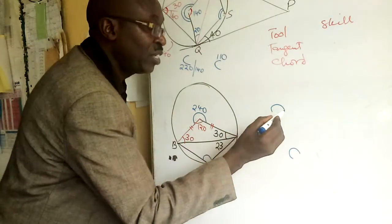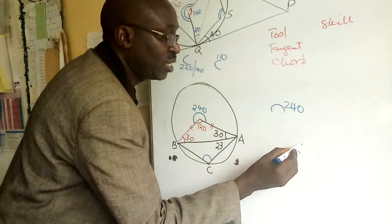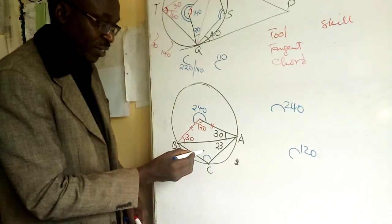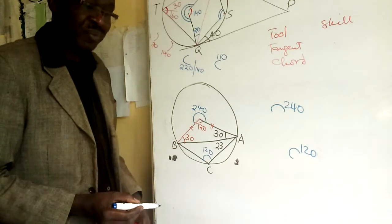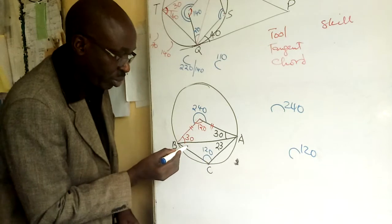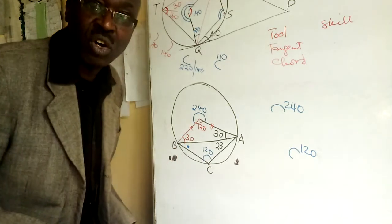So if this is 240 at the center, this is 120. So I put 120. There. If this is 120, this is 23, you should be able to get angle dot.